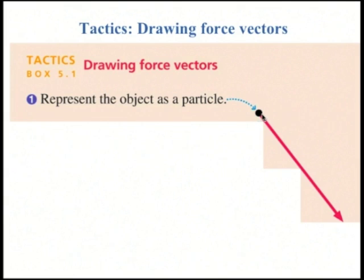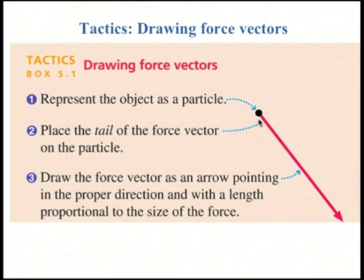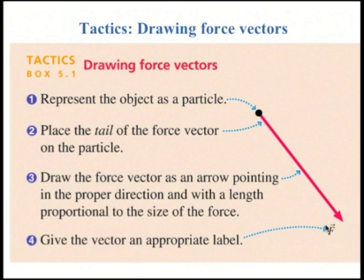To draw a force vector, first you represent the object as a particle — you just draw a dot. Then you place the tail of the force vector on the dot, and draw the force as an arrow pointing in the proper direction with a length proportional to the size of the force. You can label the arrow.